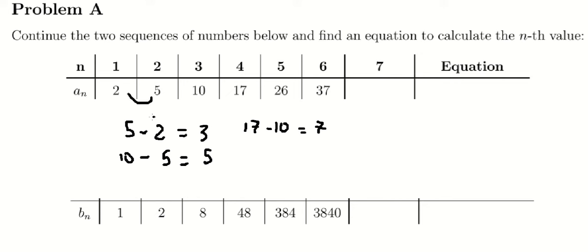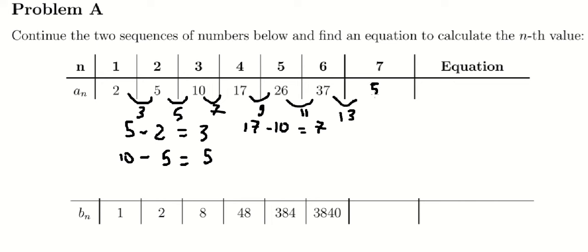So, the differences go like this: we have number 3, 5, 7, 9, 11. So, the next number in here is 13. And 37 plus number 13, we have 50.